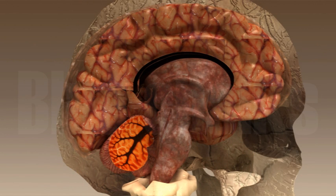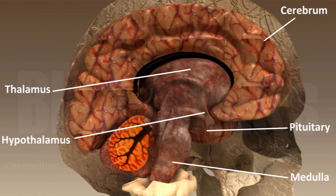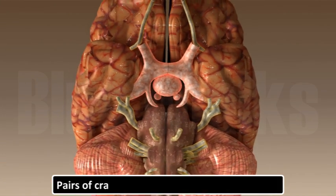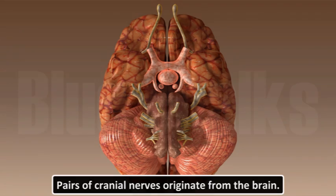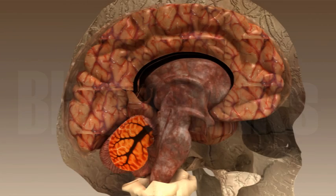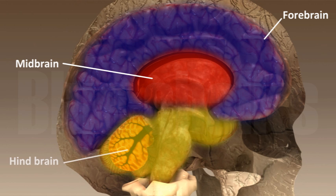The space between the membranes is filled with cerebrospinal fluid which protects the brain from mechanical shocks. The structure of the brain can be seen if we separate the two attached portions. The brain consists of cerebrum, thalamus, hypothalamus, pituitary, medulla, cerebrum and spinal cord. Pairs of cranial nerves originate from the brain. Cranial nerves are the nerves which connect all the parts in the head directly to the brain. The brain is divided into three regions: forebrain, midbrain and hindbrain.